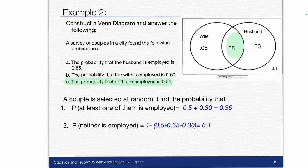And then I kind of go back to the beginning. What did it tell me first? The probability that the husband is employed is 0.85. So if I make the circle on the right, husband, I know that these two probabilities have to add up to be 0.85. So I take 0.85 and I subtract 0.55 and I'm left with 0.30.